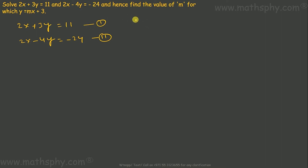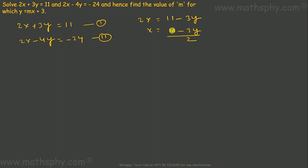I will use the first equation to get the value for x. So 2x equals 11 minus 3y, which means x equals (11 minus 3y) over 2. Let's substitute this value of x into the second equation. So this becomes 2 times (11 minus 3y) over 2, minus 4y equals negative 24.